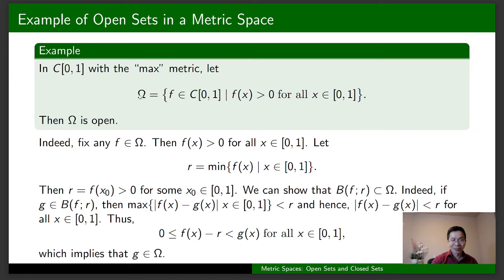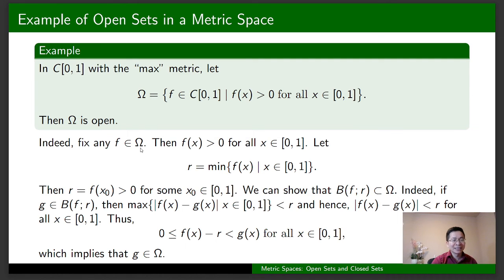By the definition of the set Omega, g belongs to Omega. So we have shown that this open ball is a subset of Omega. In summary, no matter what f you take in Omega, there is some radius r greater than zero such that this open ball is a subset of Omega. Therefore the set Omega is open.